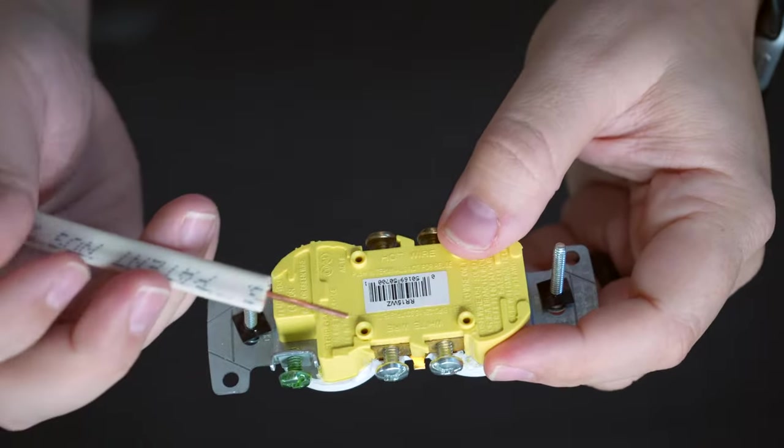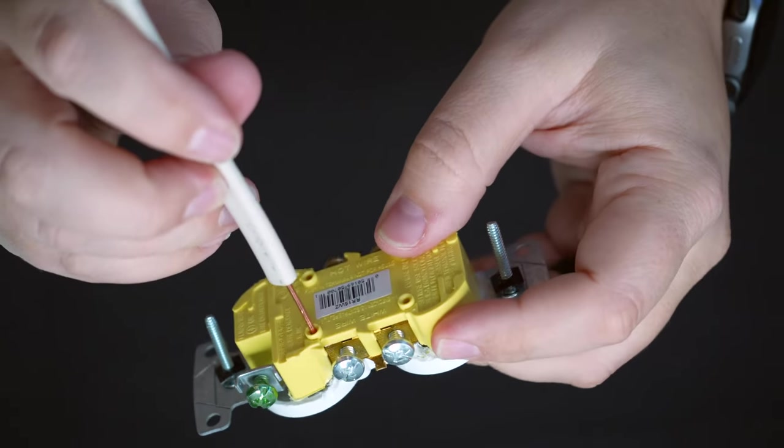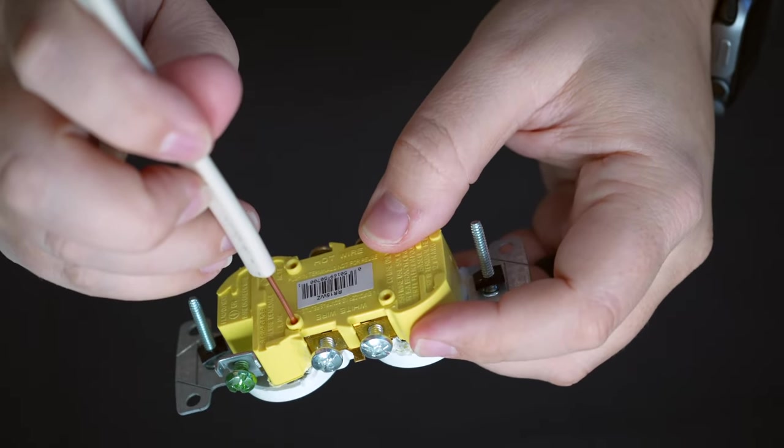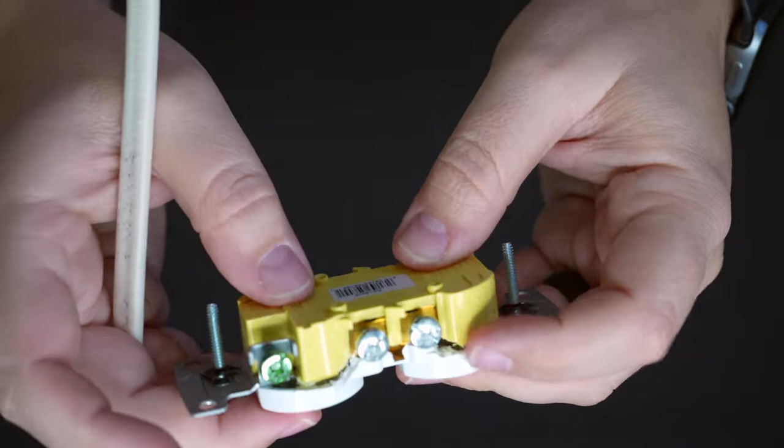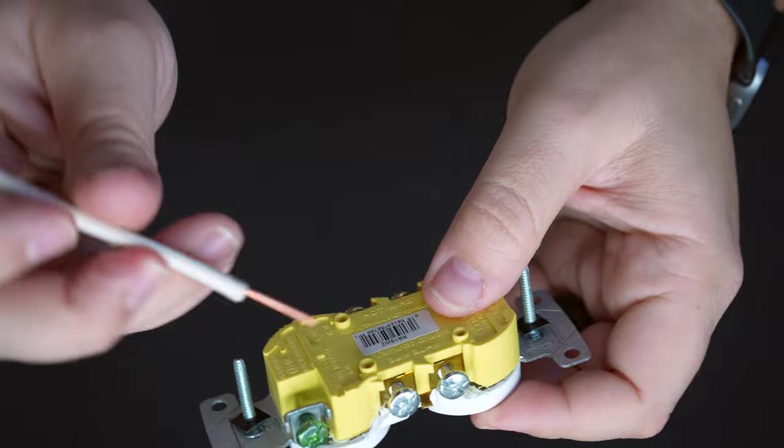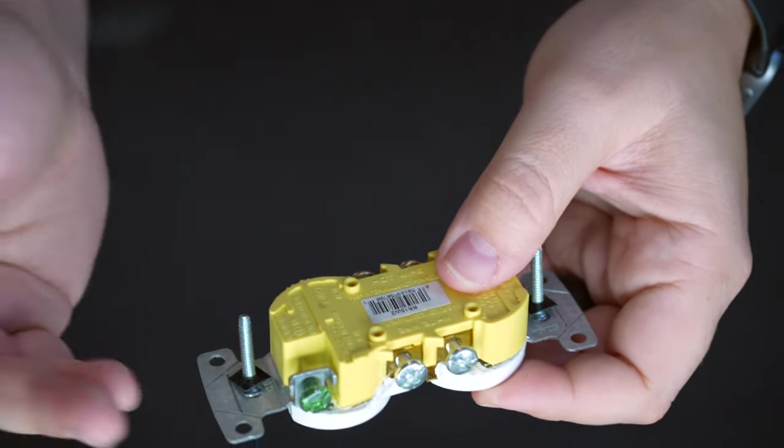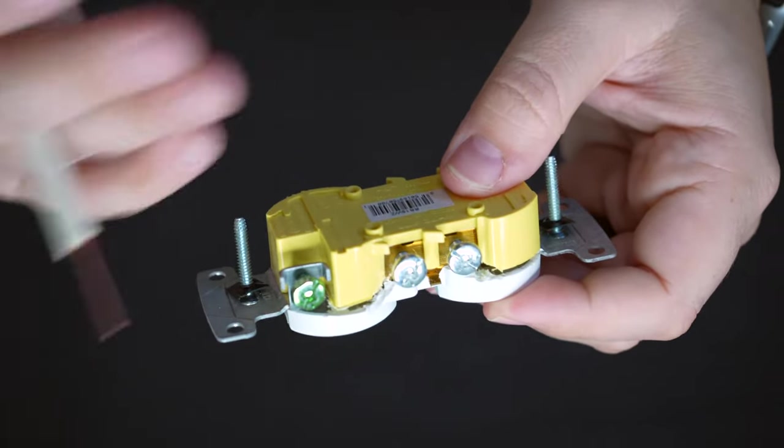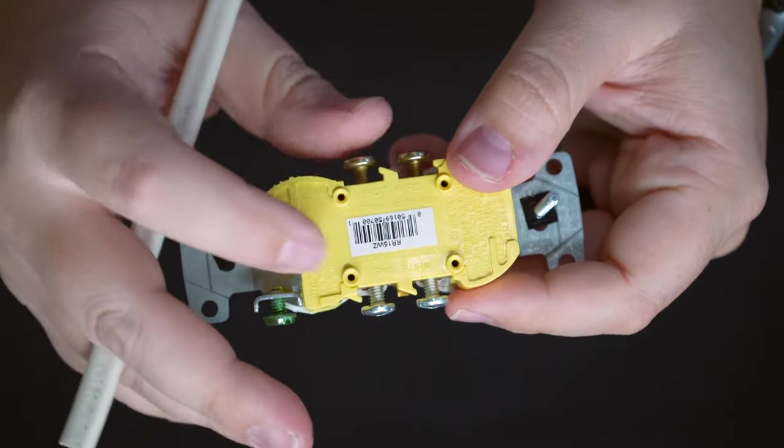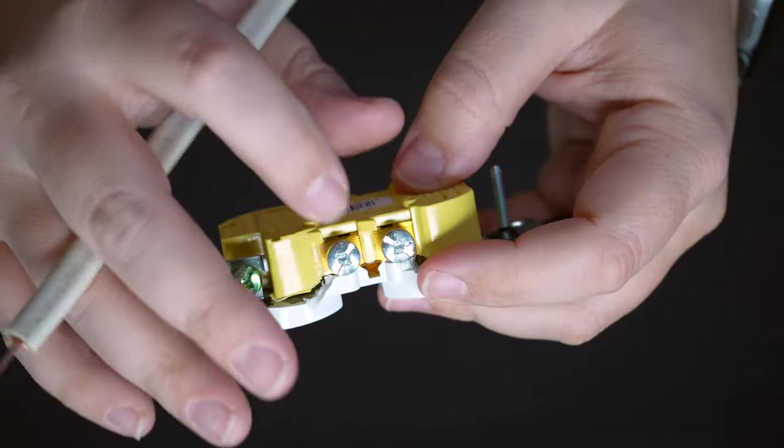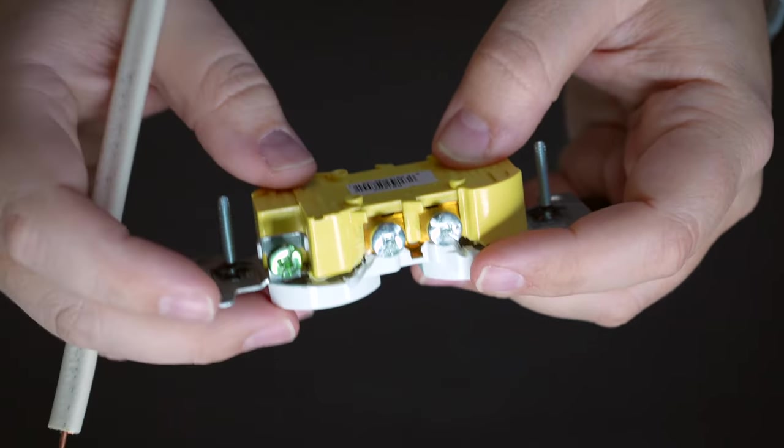But just because it's approved doesn't mean it's the way that you should actually install one of these receptacles. What happens is over time, the wire can loosen up in this connection. And if it loosens up, it can either come loose slightly, causing the outlet to no longer function, or it could come loose all the way and then cause a bigger problem like a short. And if it shorts out, there could be arcing and then it could cause a fire. So really, this method should be avoided at all costs.